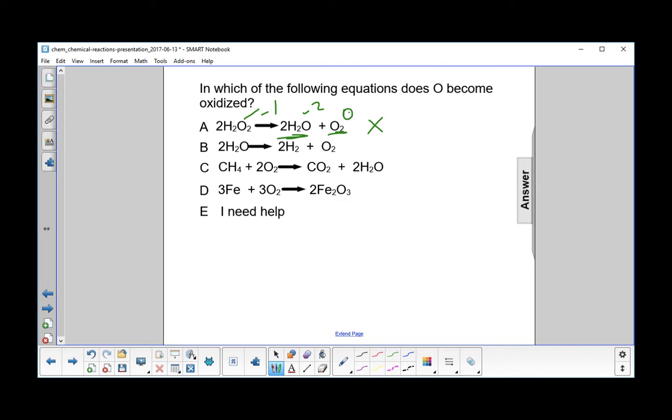Let's look at the next one, B. Here, oxygen is minus 2. Here it's 0. So the only thing that oxygen does here is get oxidized. It becomes more positive or less negative. So the answer is going to be B.